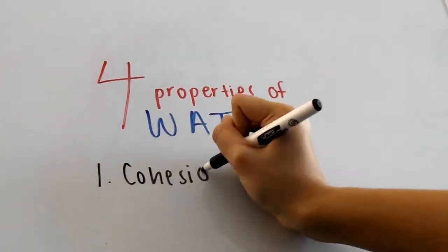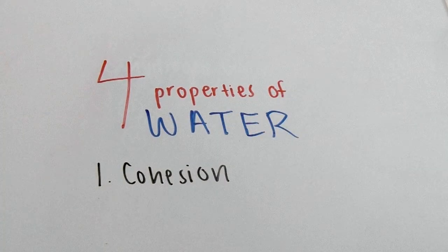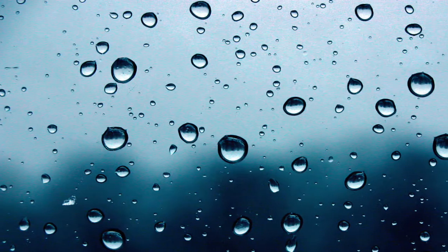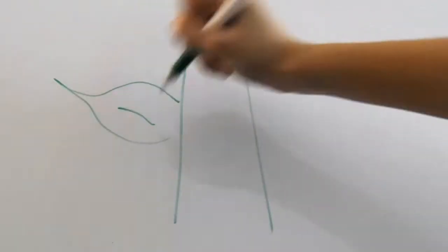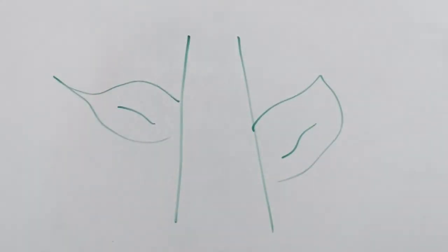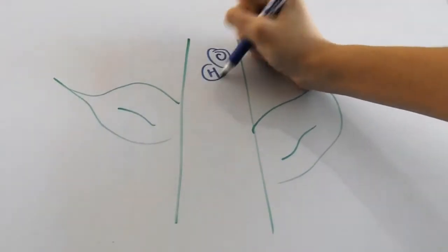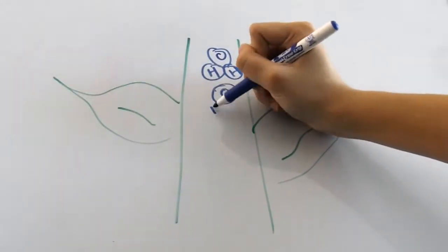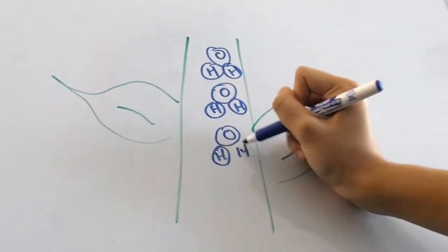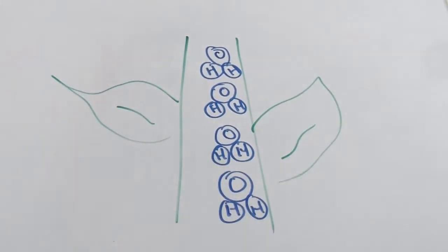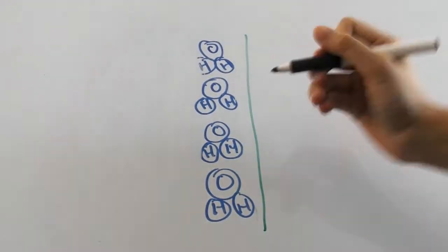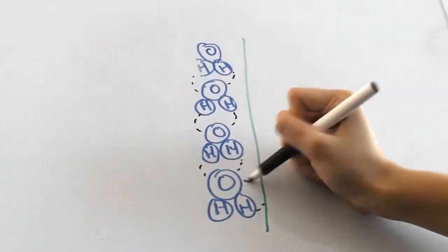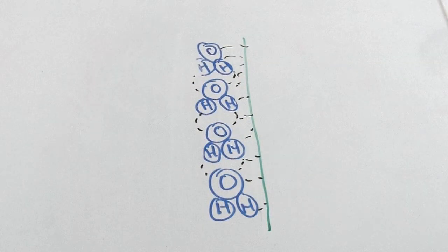First up is cohesion, the attraction of water to water. This is when hydrogen bonds hold water together, which is why you can sometimes see droplets of water on a flat surface. The water is somewhat clinging to itself to form a little dome. Cohesion works with adhesion to pull water up a plant without requiring any energy, which is a feat in itself. Adhesion is the attraction of water to something else. So you can see here that while water is seemingly linking itself to itself, it's also clinging to the sides of the plant cells, which helps it keep flowing up in the plant, even against gravity.